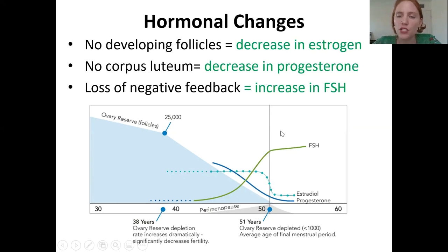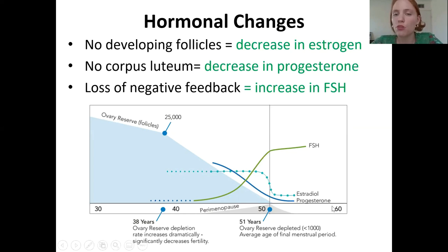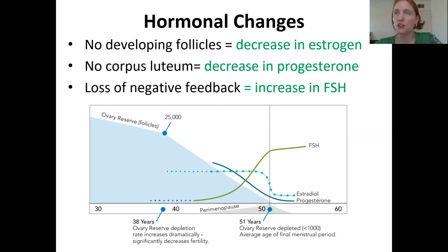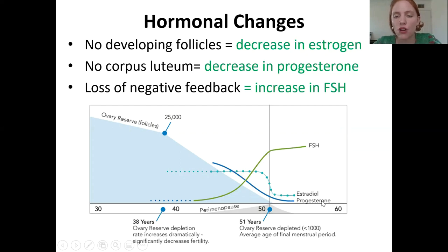FSH is going to go up, as well as luteinizing hormone, because you've lost your negative inhibition. As for progesterone, remember it's secreted from the corpus luteum — what's left over after ovulation. If you don't have follicles and you're not ovulating, you don't have a corpus luteum, so progesterone levels also decline. You have a decline in estrogen, a decline in progesterone, and an increase in FSH.